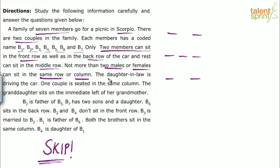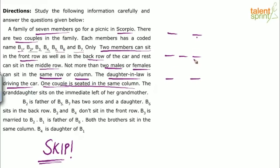The daughter-in-law is driving the car. In this family of 7, there is a daughter-in-law who is driving — assuming right-hand drive, this is the driver's seat and daughter-in-law is sitting there, though which member she is isn't yet clear. One couple is seated in the same column — so the couple can take any of the 4 pairs of column seats. Then the granddaughter sits on the immediate left of the grandmother.